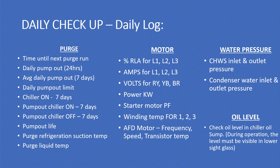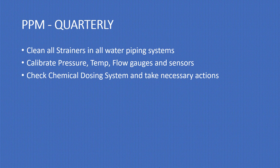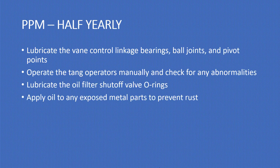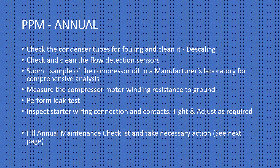Check water pressure and oil level. If you have a similar type of compressor, for PPM quarterly: clean all strainers in all water piping systems, calibrate pressure gauges, temperature sensors, flow gauges, and sensors, and check the chemical dosing system and take necessary actions. For PPM half-yearly: lubricate the vent control linkage bearings, ball joints, and pivot points, operate the vent operators manually and check for abnormalities, lubricate the oil filter shutoff valve O-rings, and apply oil to any exposed metal parts to prevent rust.